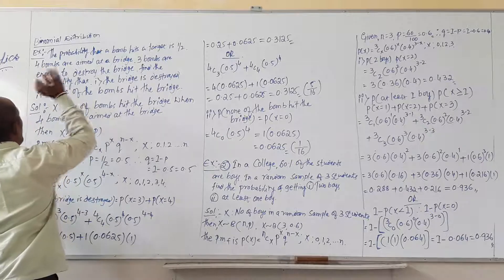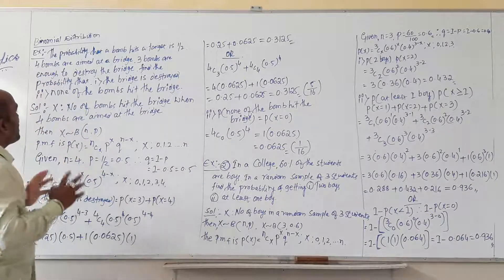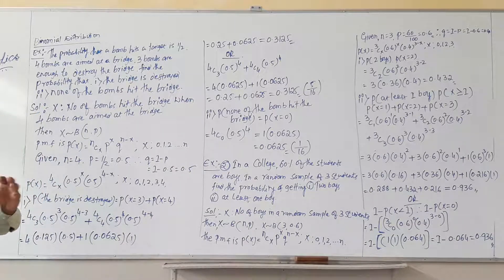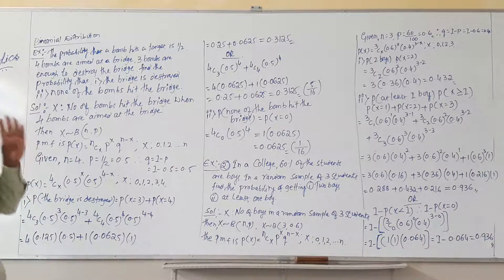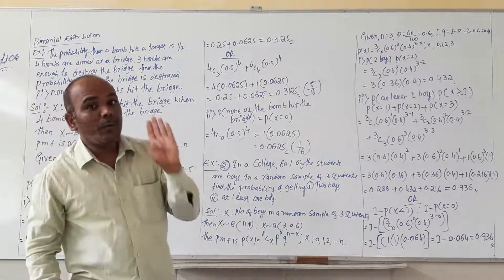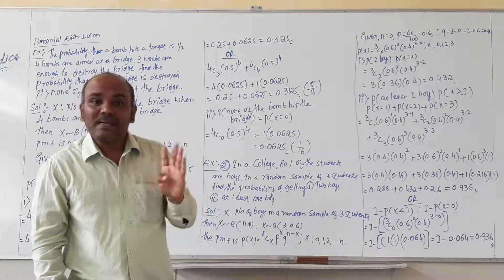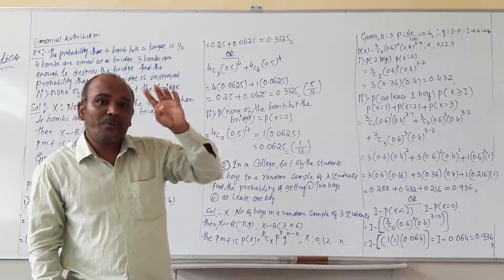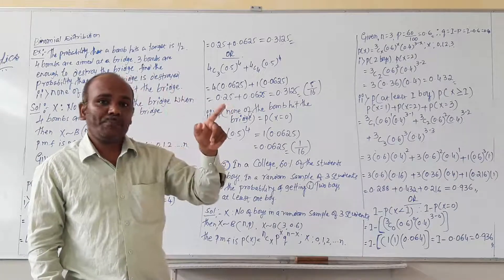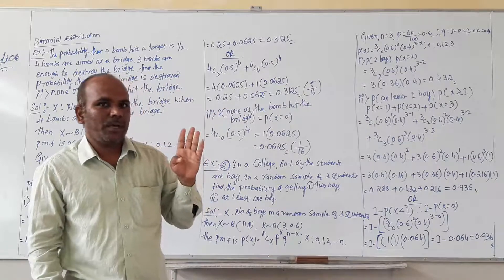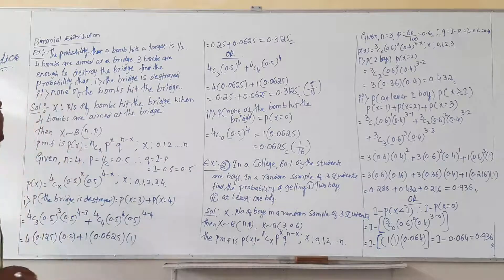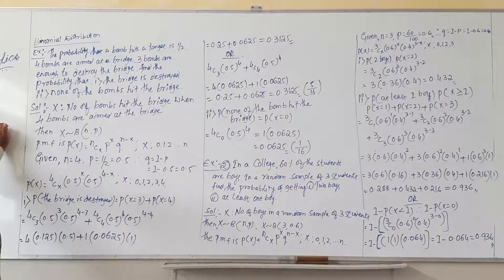Then how many bombs are aimed at the bridge? That is the value of small n. So what is given here? Four bombs are aimed at a bridge. But three bombs are enough to destroy that bridge. But ultimately we are considering here four bombs. We are not considering three bombs because when we aim four bombs at the bridge, then only that bridge will be destroyed. Three bombs are enough but four bombs are aimed at the bridge. So that is why the small n value is 4 and the p value is 1 by 2.